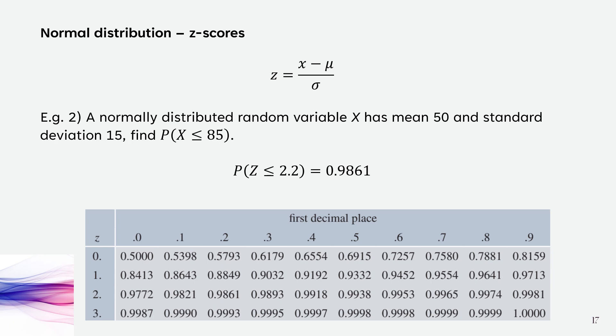Finding 2.2, remember below 2.2 comes from the table, and that is 0.9861. So the probability that a score is less than or equal to 85 is equal to 0.9861. Thank you.